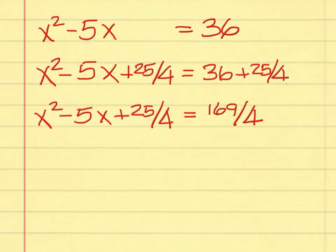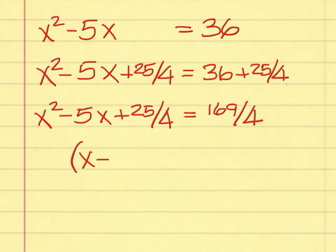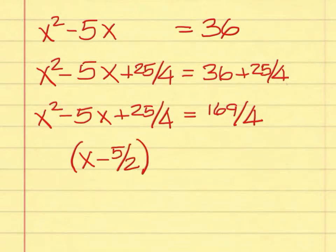Now we can make the left-hand side into a perfect square like the last example. You need x, then the sign that came before the middle term — minus — and you need half of the middle term. Half of the middle term here was 5 over 2. So the quantity squared of x minus 5 over 2 equals 169 over 4.